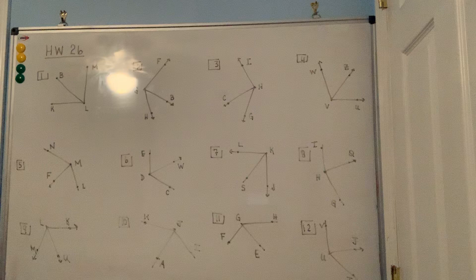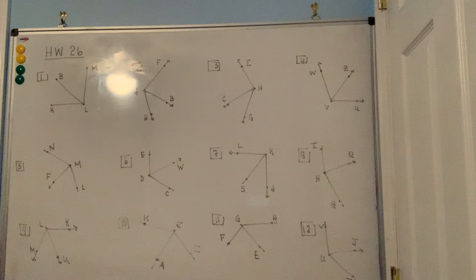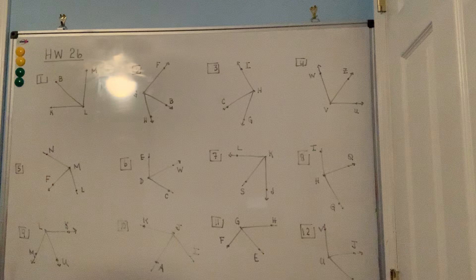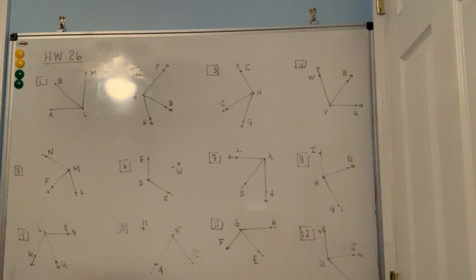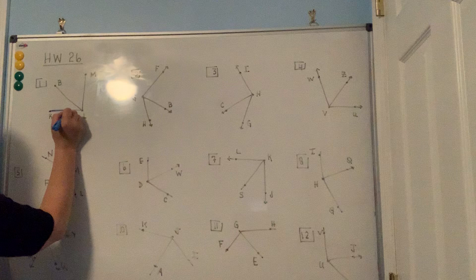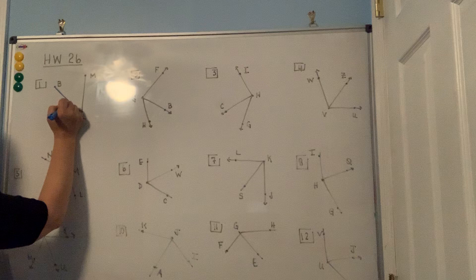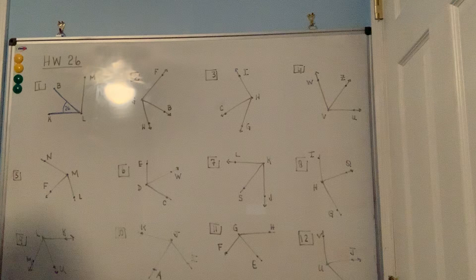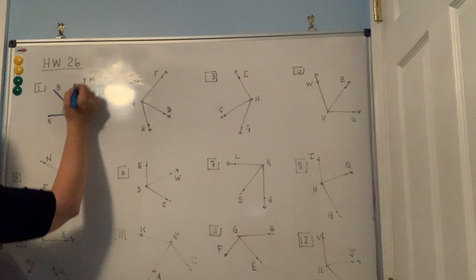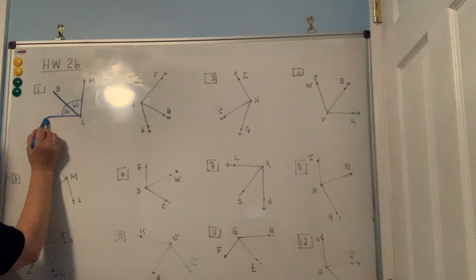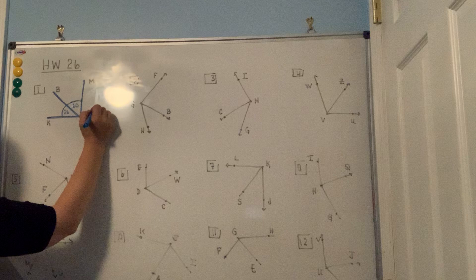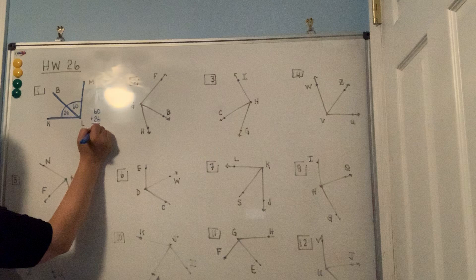This is homework number 26. I drew almost all of the pictures on the front side and some on the reverse side. Number one says find the measure of angle KLM, given that angle KLB is 26 degrees and angle BLM is 60 degrees. To get angle KLM, you add those angles together: 60 plus 26 gives you 86 degrees.